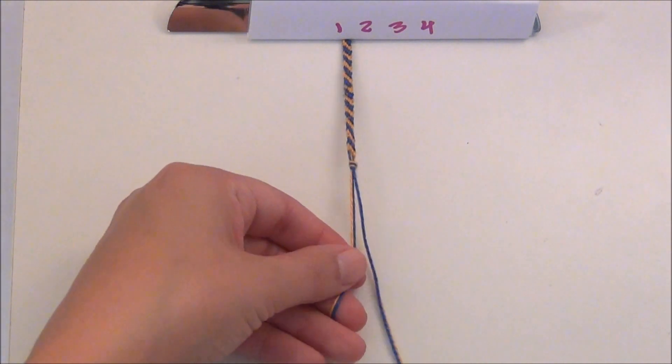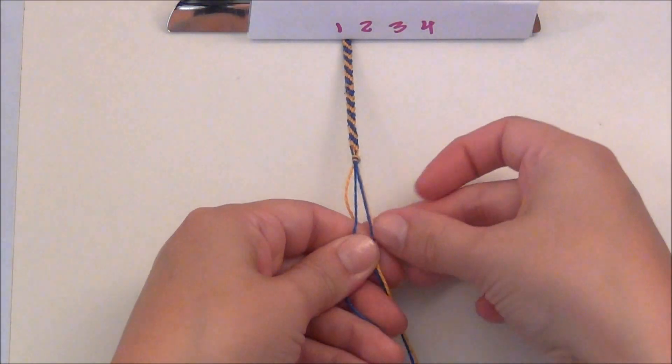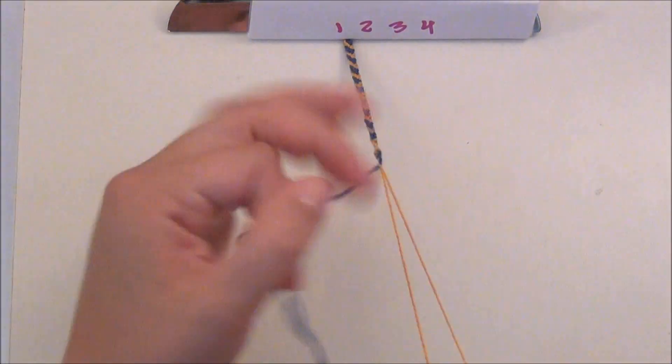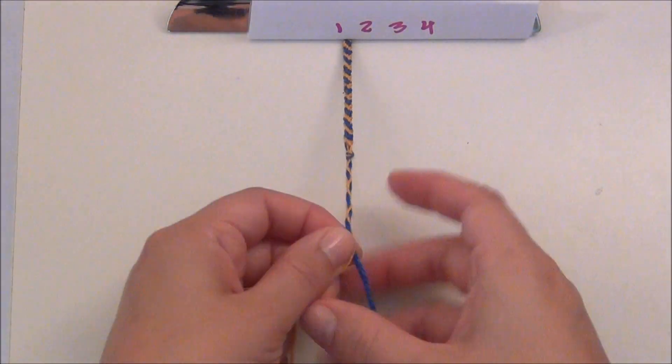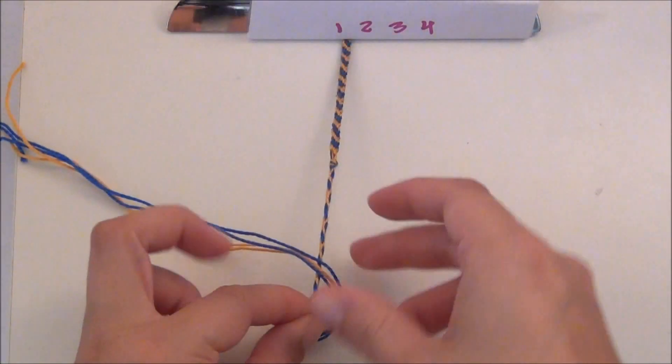I only have four strings on this one, so I'm just going to double up the blue strings so I can get three strands to braid. Once that braid is finished, just tie a knot to finish it off.